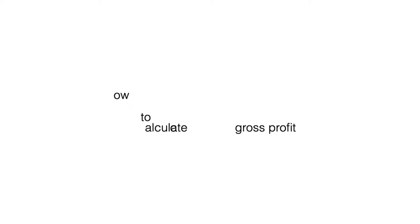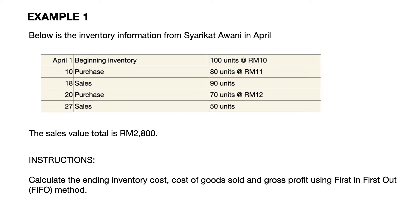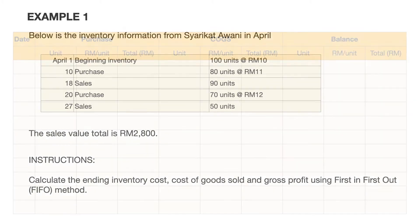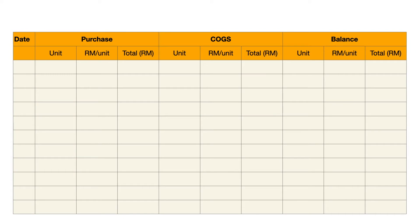We will be using this question. When preparing the answer for perpetual inventory system using first-in-first-out, we first have to prepare this schedule. This schedule includes information like date, purchases, cost of goods sold (COGS), and balance.